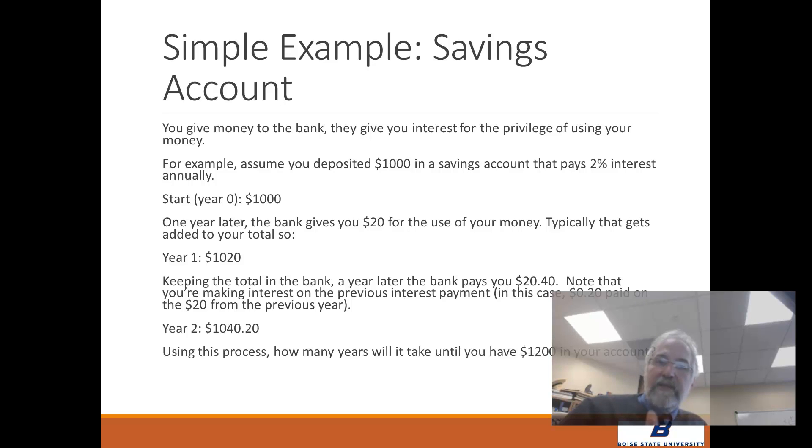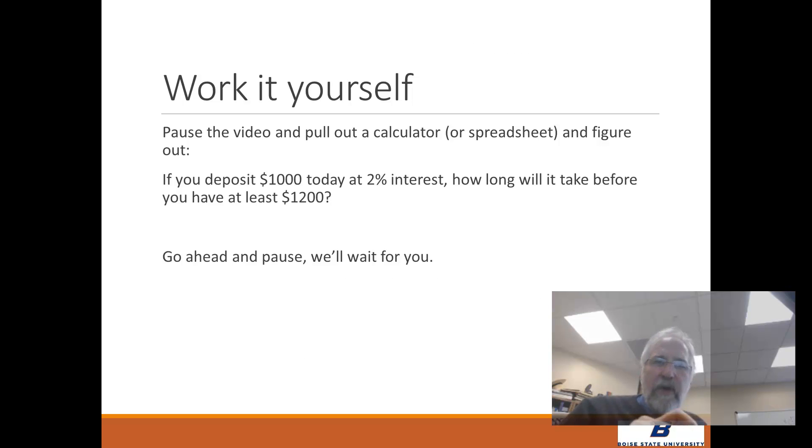A year from now, 2% back, that's $20. So now they either give you the $20, or more typically, they'll deposit it back into that account. So a year later, you've got $1,020 in your account. Keep it in for another year, your interest is now more than $20. It's $20.40, because you're making interest on the interest. Now you've got $1,040.20, and so on. So using that process, the question I want to ask is, how long will it take before you have $1,200 in your account?